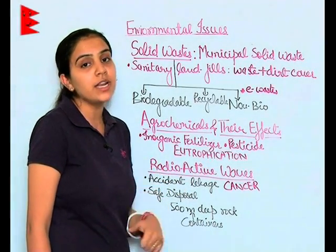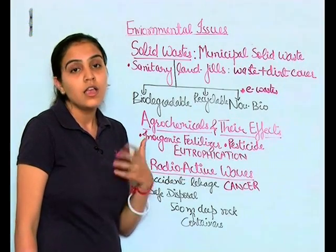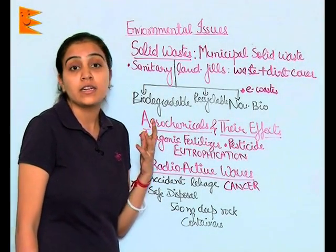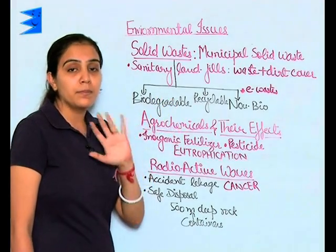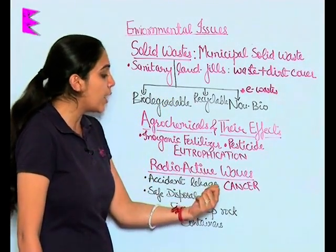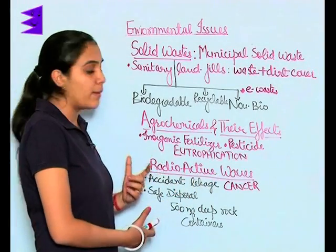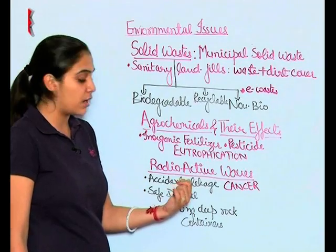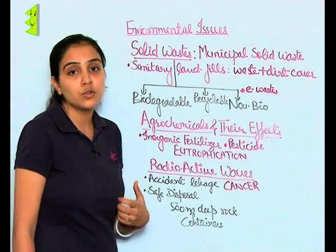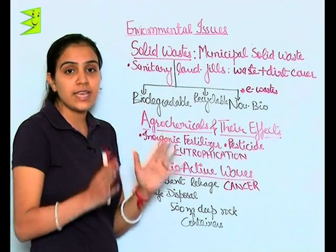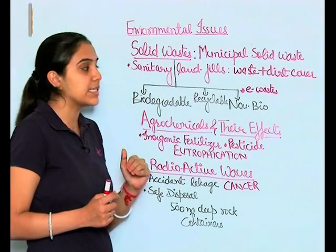Radioactive waves — it was initially thought that radioactive material is the safest and most non-polluting method to generate electricity. But later it was discovered that it is the most dangerous one, because radioactive waves cause cancer which is irreparable. The two major drawbacks are accident leakage and the issue of safe disposal. It is believed that radioactive waste should be buried in rocks 500 meters deep inside the rocks.